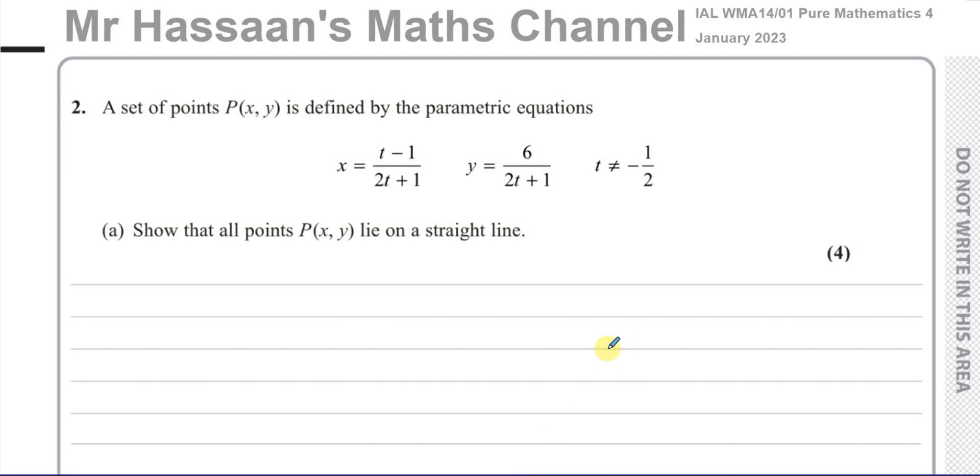Welcome back, this is Mr. Hassaan's Maths Channel. I'm now answering question number 2 from the January 2023 Pure Mathematics P4 paper. Here we have a question about parametric equations. A set of points P(x, y) is defined by the parametric equations x = (t-1)/(2t+1) and y = 6/(2t+1), and t cannot be negative a half, otherwise this will be undefined.